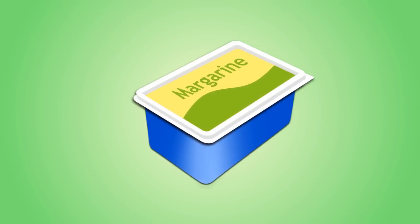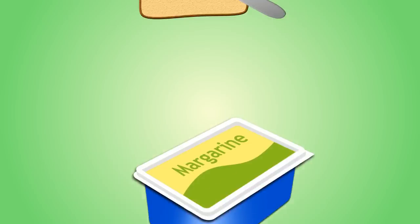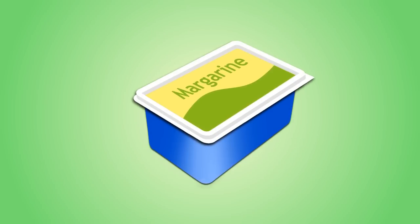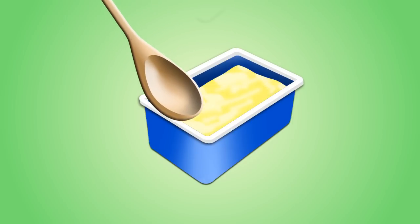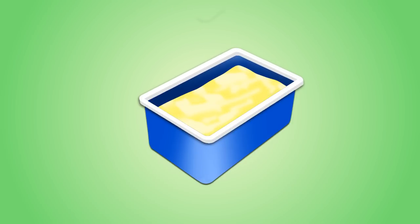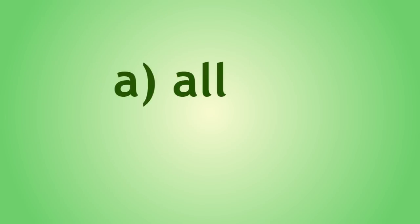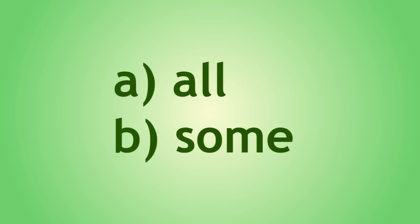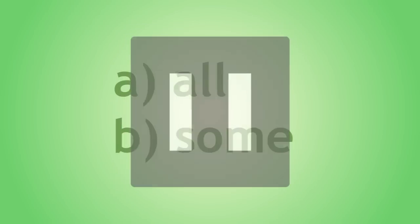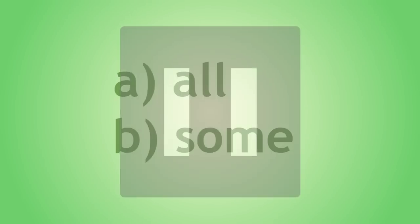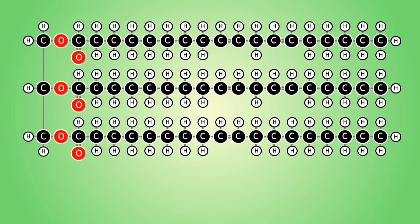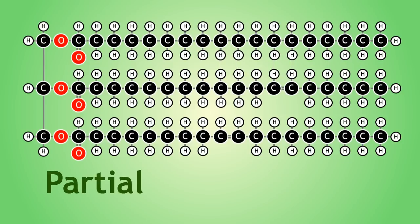Let's think about margarine and what it is used for. It is usually spread on bread or used in baking. We can use a spoon and scoop spoonfuls out. Margarine is usually stored in a plastic container and it takes the shape of the container. In the production of margarine, only some of the double bonds of the polyunsaturated vegetable oils are hydrogenated. This is called partial hydrogenation.